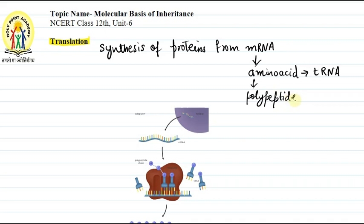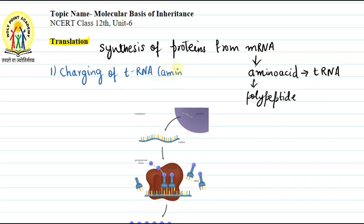Polypeptides are joined together with the help of peptide bonds. In the process of translation, the first step is the charging of tRNA molecule, also called amino acylation of tRNA.